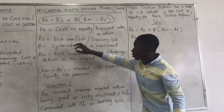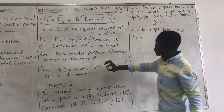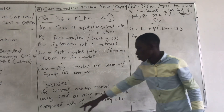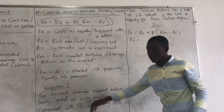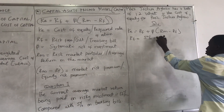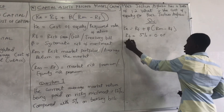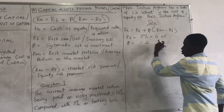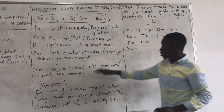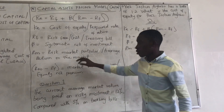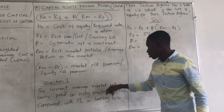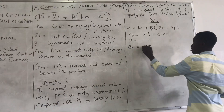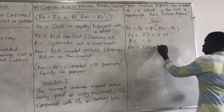RF is the risk-free rate — it could be called gilt, jilt, or treasury bonds. From the question, the treasury rate is 5%, so RF = 0.05. Beta is given as 1.2. RM is the average return on the market — the current average market return on risky investments is 12%, so RM = 0.12.